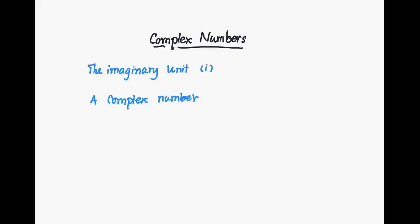The imaginary unit i is defined as i equals the square root of negative one, or equivalently i squared equals negative one. For any positive real number a (where a is greater than zero), the square root of negative a can be written in the form i times the square root of a.